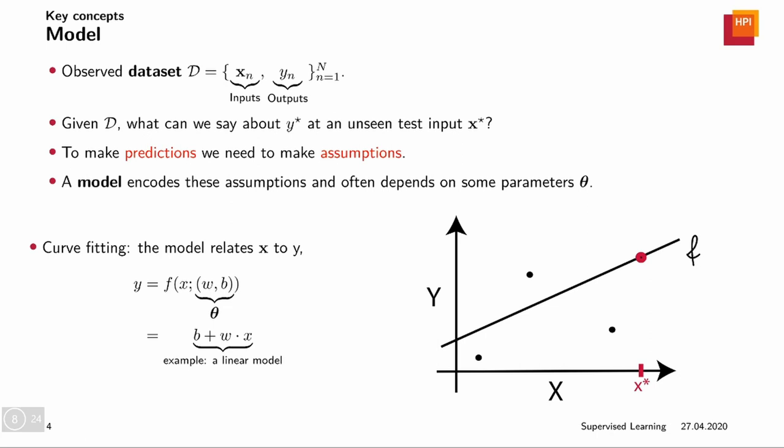Where b would be the abscissa and w tells us something - w for weight and b for bias. It tells us something about if we move one to the right in x space then we assume that we would move up by w, so it's a slope in this model.